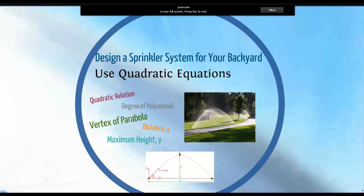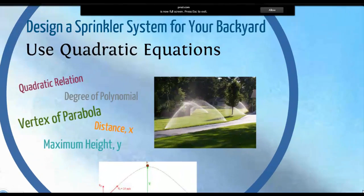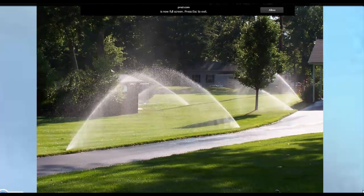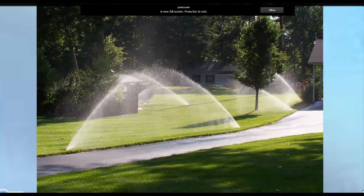You would also like to design a sprinkler system for your big backyard. A good irrigation system will allow your grass to grow green and your flowers to flourish. To do this, you'll need to use your knowledge of quadratic equations. From this picture, you'll notice that the water projection resembles a parabola that opens downwards.